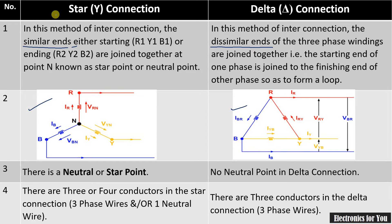In case of star connection, as the ends are joined to a common point, they form a neutral point or star point. Whereas in case of delta connection, there is no neutral point in the connection.